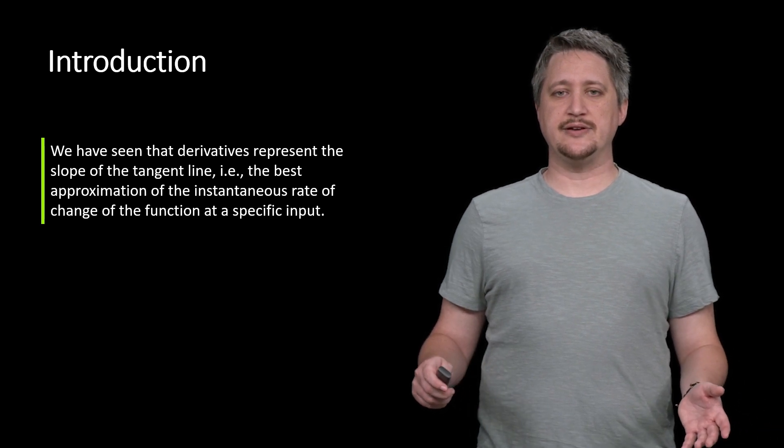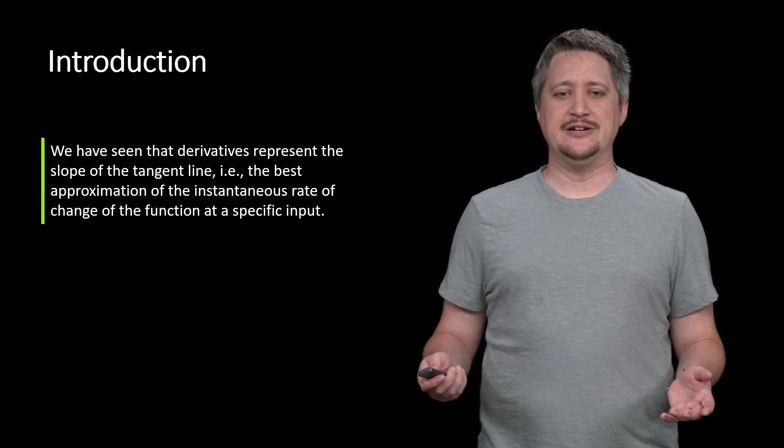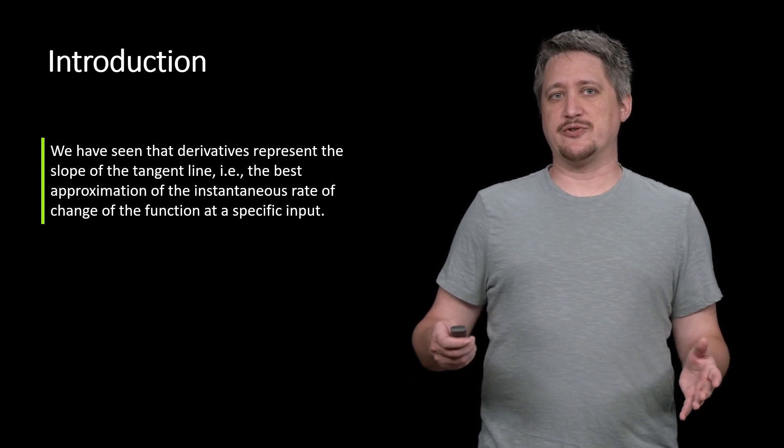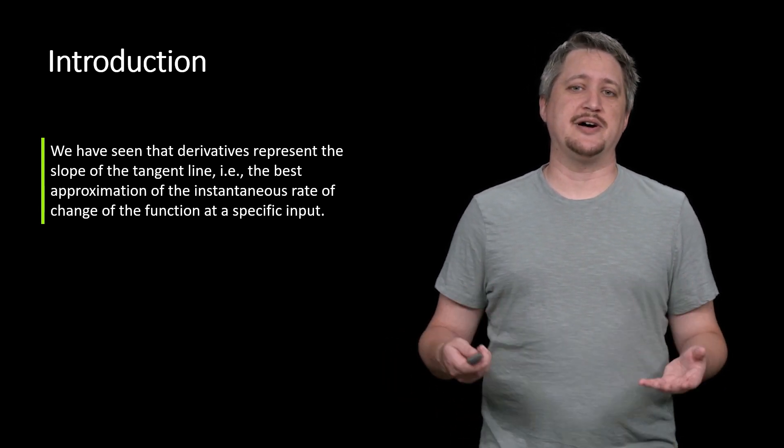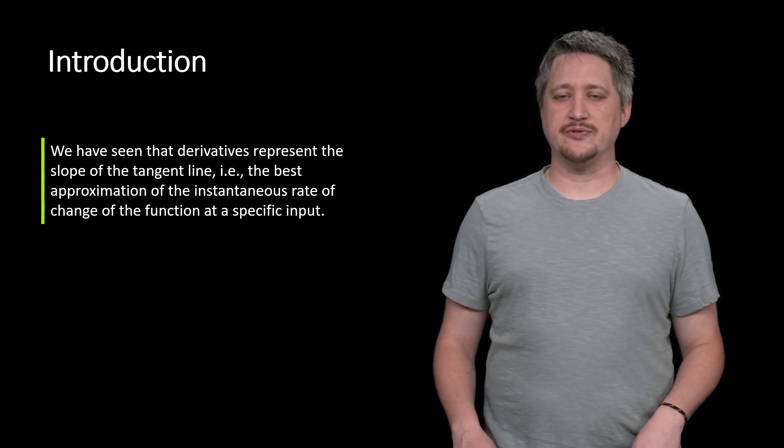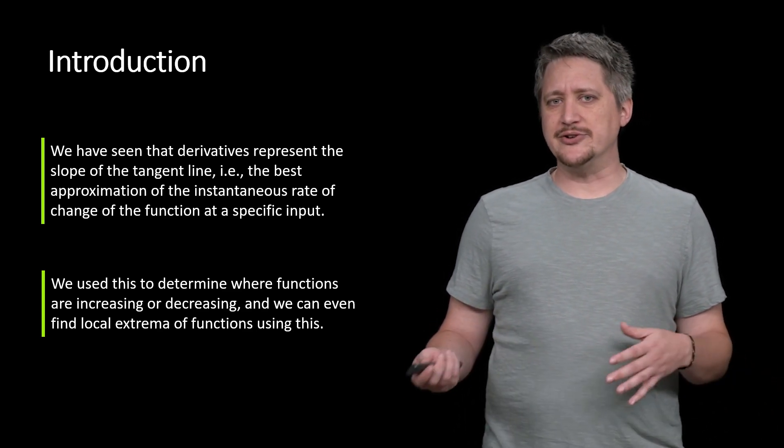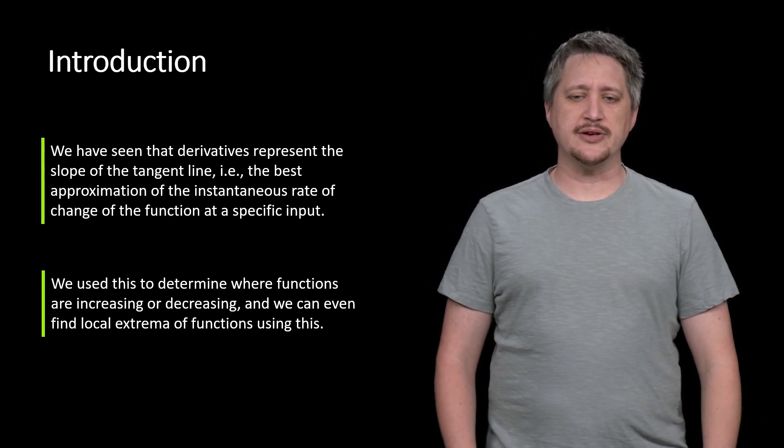Hello. We've seen in the past that derivatives represent the slope of the tangent line. We could use this as a measure for a bunch of different things - the best approximation of the instantaneous rate of change of a function. But we also use this to tell whether a function was increasing or decreasing and a few other things.